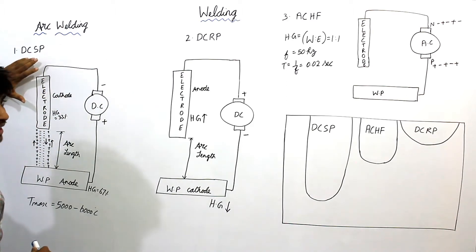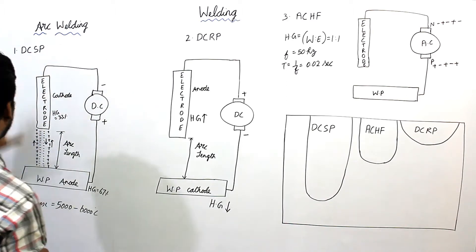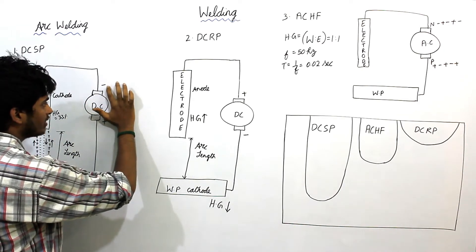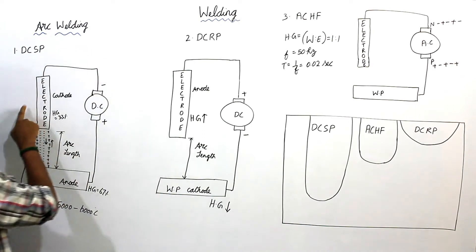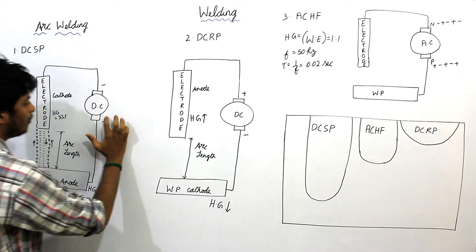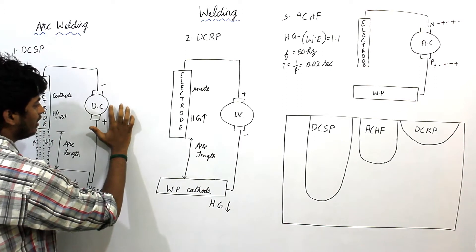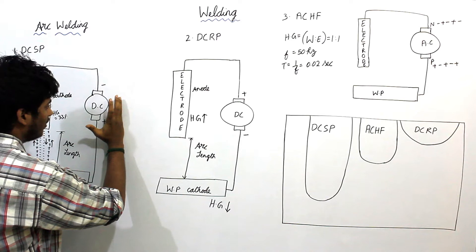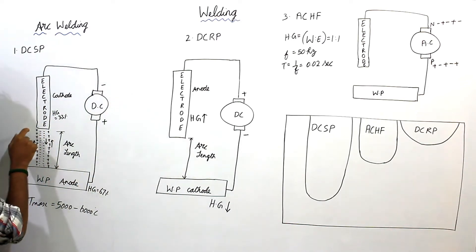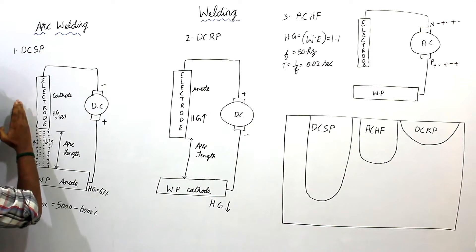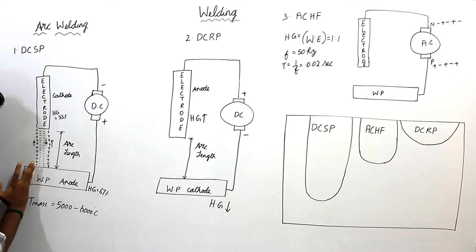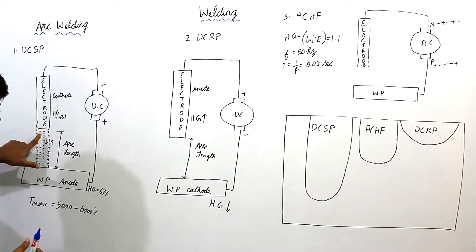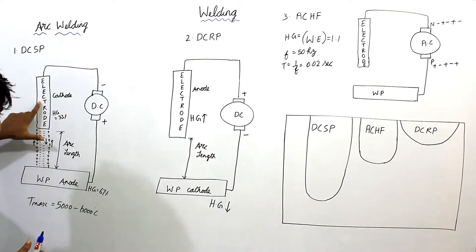First, what is DCSP? Under this, the negative terminal of the power supply is connected to the electrode, that is the cathode. And the positive terminal of the power supply is connected to the anode. When the power is supplied and the arc is maintained between cathode and anode, a very high velocity of negatively charged electrons is generated at the cathode.